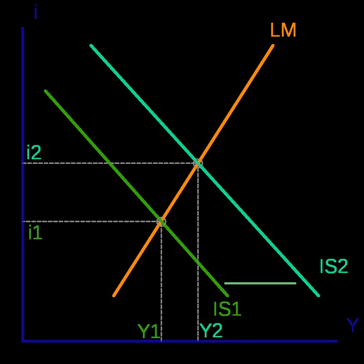In the aggregate demand-aggregate supply model, each point on the aggregate demand curve is an outcome of the IS-LM model for aggregate demand Y based on a particular price level. If one considers a higher potential price level, in the IS-LM model the real money supply M/P will be lower and hence the LM curve will be shifted higher, leading to lower aggregate demand. Hence at the higher price level the level of aggregate demand is lower, so the aggregate demand curve is negatively sloped.